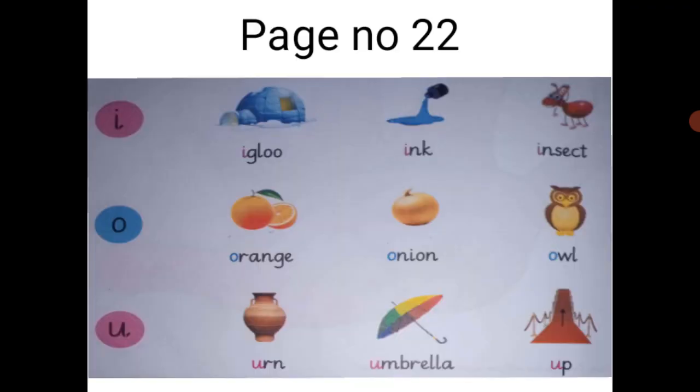Fun with alphabet, page number 22, reading I. I see reading start over here. This is our AI: I, igloo, I, ink, I, insect.